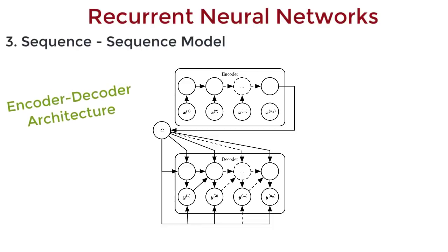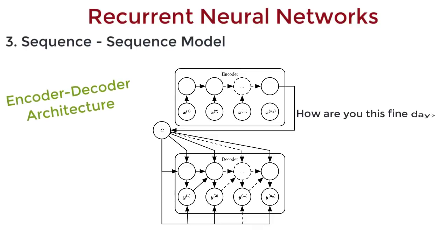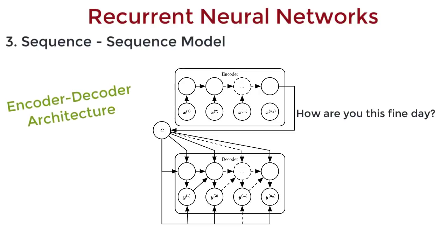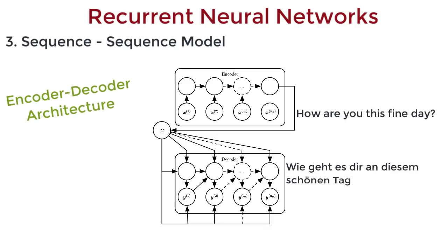Take the example of English-to-German translation. Each sequence is a sentence, or a set of sentences. Each neuron xt is a word in the input English sentence, and each neuron yt is a word in the output German sentence.